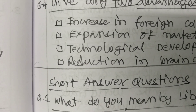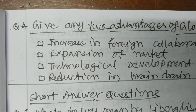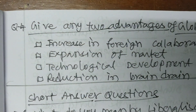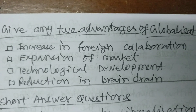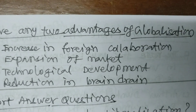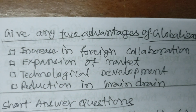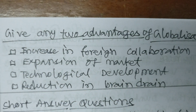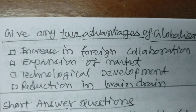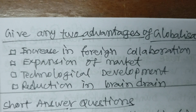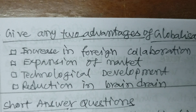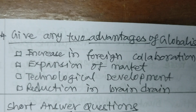Fourth question: give any two advantages of globalization. The advantages include: increase in foreign collaboration, expansion of market, technological development, and reduction in brain drain. Thank you, students.